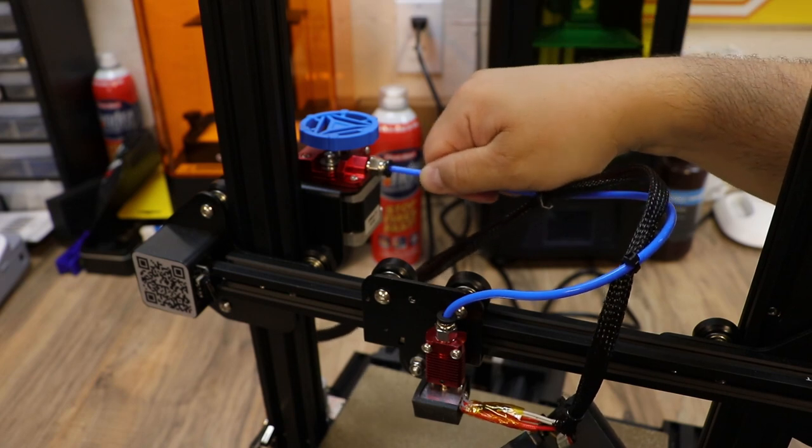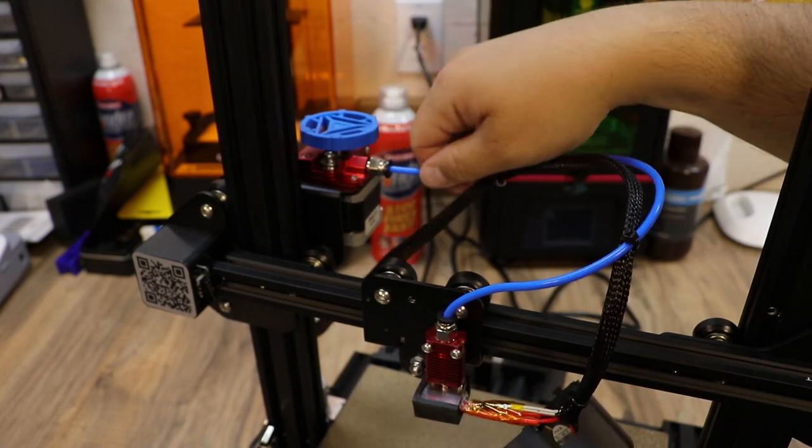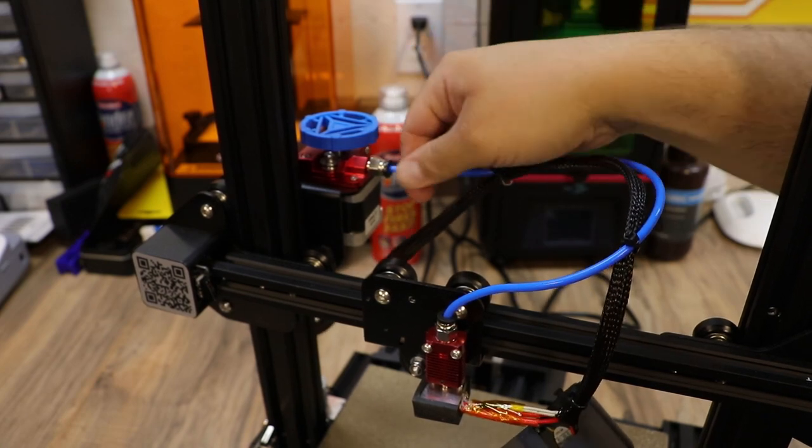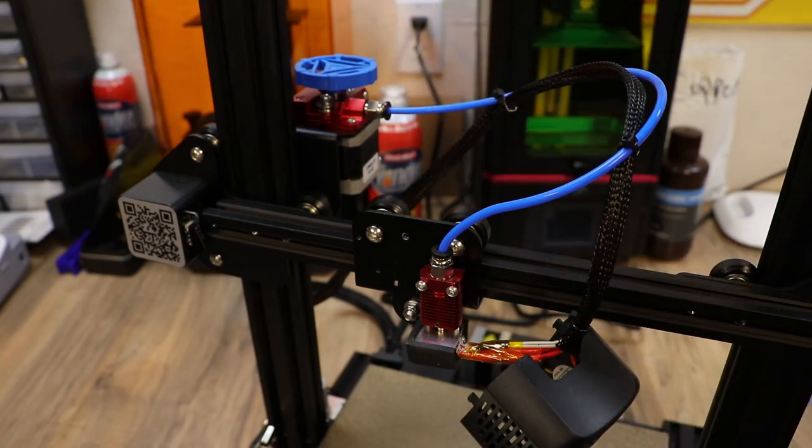From there you just take your PTFE tubing and push it into the new coupler very hard make sure it's very straight and it's all the way in there give it a good yank make sure it doesn't come back out. Now we have the PTFE tubing and the new couplers in you can cool down your hot end now and it's time to put the fan shroud back on.